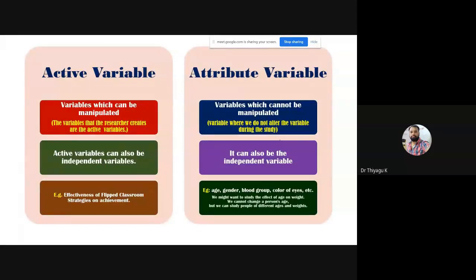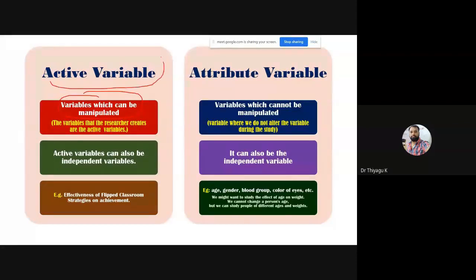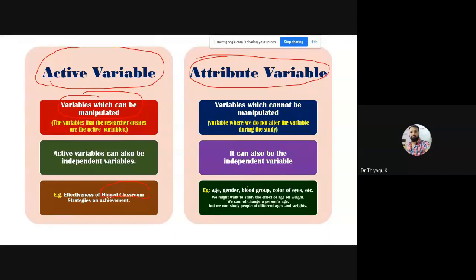The next is the active variable. In the context of the independent variable, what is an active variable? If the variable you are able to manipulate, it is called an active variable. If the variable you are not able to manipulate, it is also called an attribute variable. In this case, the active variable example is the effectiveness of the flipped classroom strategy — the flipped classroom is the independent variable. As a researcher, you could be able to modify and manipulate the independent variable. So the flipped classroom may be treated as an active variable.